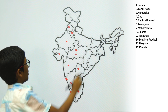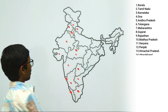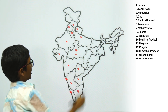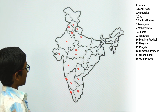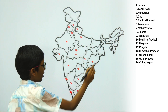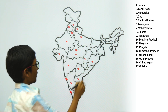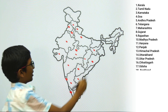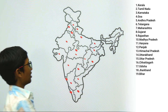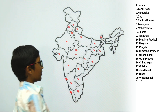13. Himachal Pradesh, 14. Uttarakhand, 15. Uttar Pradesh, 16. Chhattisgarh, 17. Odisha, 18. Jharkhand, 19. Bihar, 20. West Bengal, 21. Sikkim.